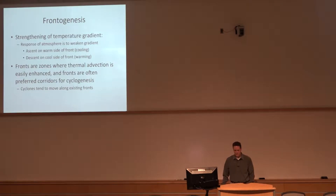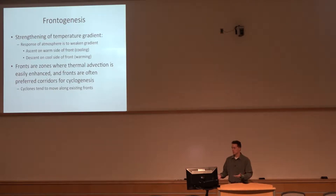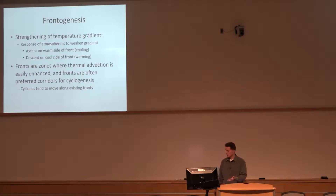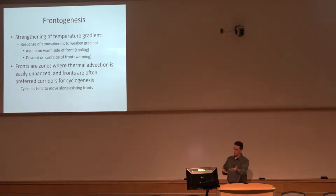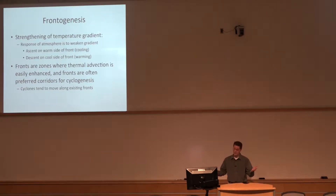Frontogenesis — the point is the atmosphere doesn't like changes in the temperature gradient. If it strengthens, the atmosphere will try to weaken the gradient; if it's weakening, it'll try to strengthen it. So in the case of frontogenesis, if you're strengthening the temperature gradient, you need to cool the warm side and warm the cool side to spread the gradient out. That's what the vertical motion field does — you get ascent on the warm side of a strengthening front and subsidence on the cold side.